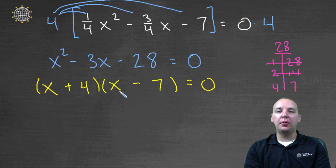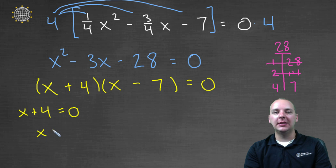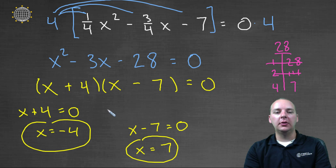And now since we have a product equal to zero, we can set each of these factors equal to zero. So x plus four equals zero, that'll give us x equals negative four, that's one solution. And then x minus seven equals zero, so x equals seven would be the other solution.